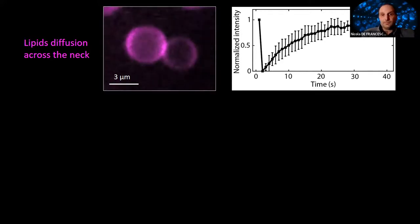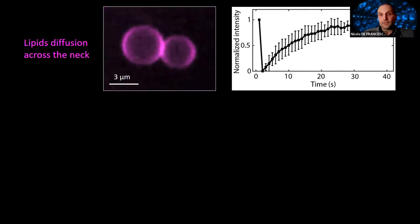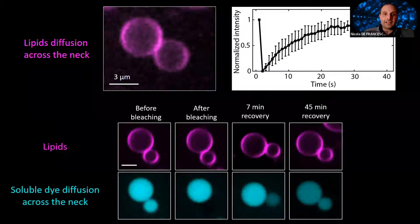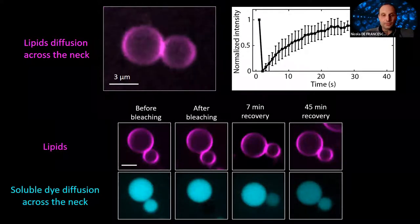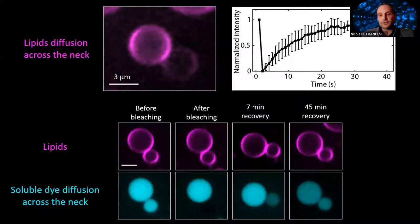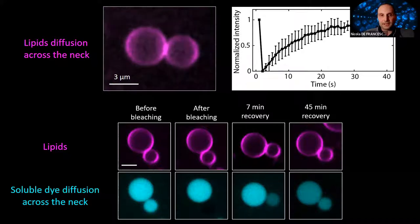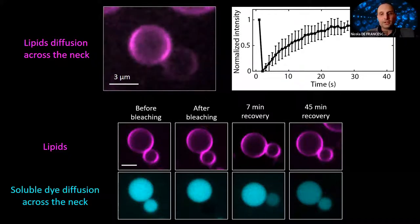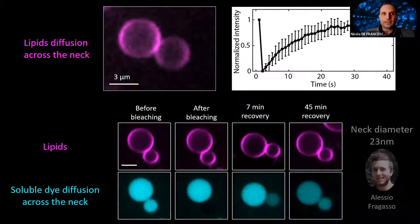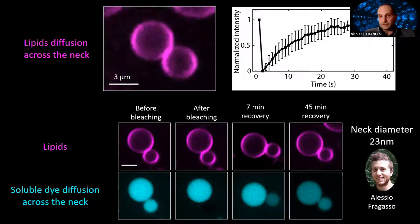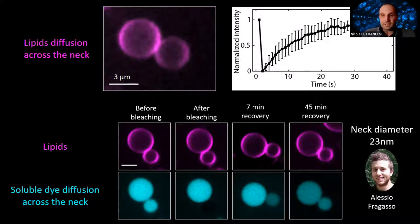Thanks to the high yield of dumbbells obtained with the SMS, this fluorescence recovery experiment can be performed on thousands of dumbbells. We can also encapsulate fluorescent dye in the lumen, bleach it, and observe recovery from the other lobe — confirming there is an open neck between the two lobes. Based on this recovery curve, Alessio developed a mathematical model and estimated the size of this toroidal pore, which in this particular case is 23 nanometers — a rather tight neck.